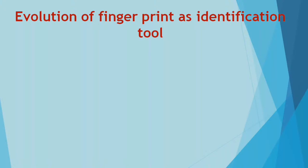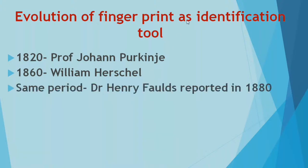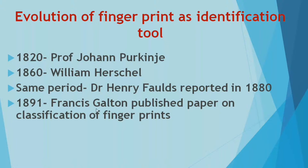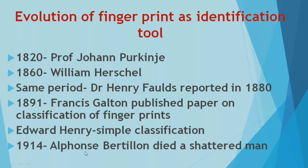Fingerprints are also an important identification tool. In 1820, Professor Johan Purkinje studied them. In 1860, William Herschel studied them further. Around the same period, Dr. Henry Faulds reported on fingerprints in 1880. Francis Galton published a paper on classification of fingerprints, and in 1891 Edward Henry developed a simple classification system. In 1940, Alphonse Bertillon died a shattered man as fingerprints superseded his anthropometric system.